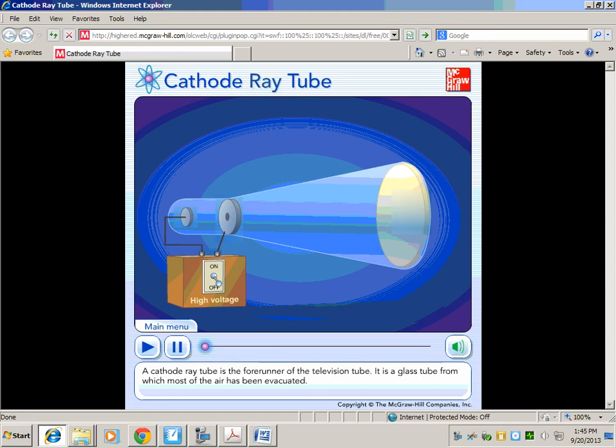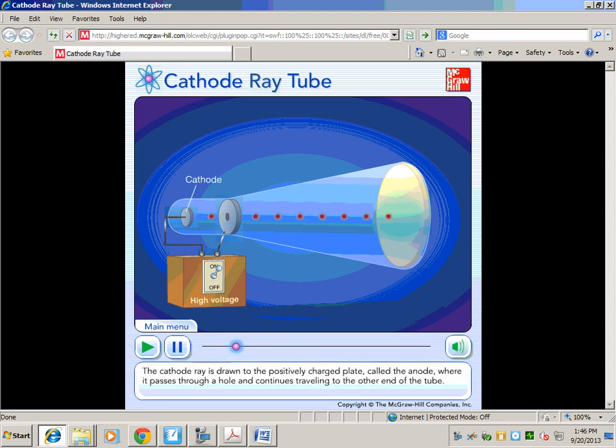So if you watch, he'll shoot the cathode ray up to this plate where it will make an image, a fluorescent image.